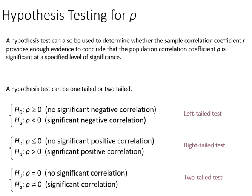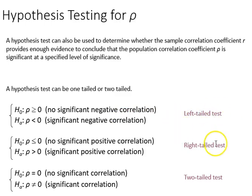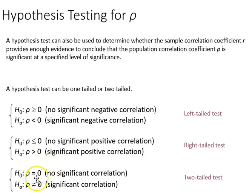We can also use a hypothesis test for rho. The null is that rho is greater than or equal to 0, and the alternative is that rho is less than 0, which is a significant negative correlation — that's a left-tailed test. For a right-tailed test, rho is less than or equal to 0 and the alternative rho is greater than 0. For a two-tailed test, rho equals 0 for the null, and the alternative is that rho does not equal 0.